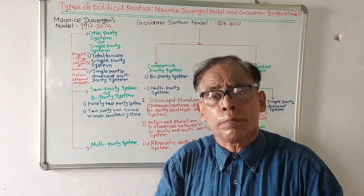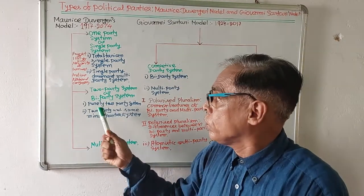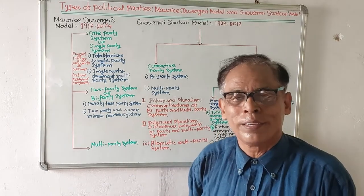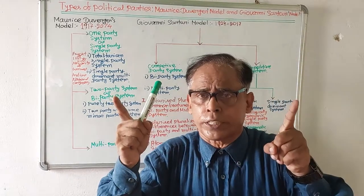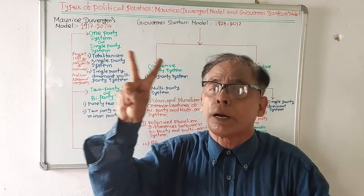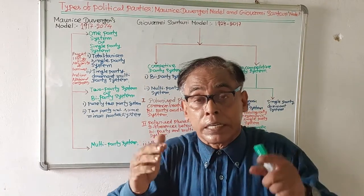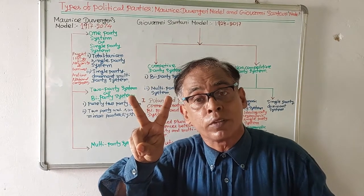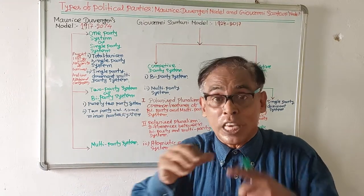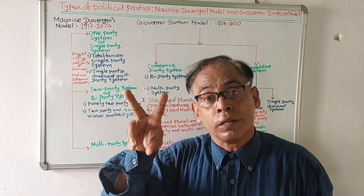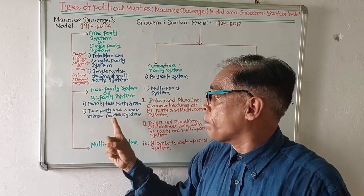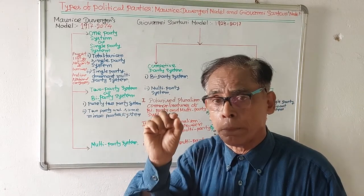He has categorized the two party system into two categories: one is the purely two party system, where in a country only two parties are found; the other is the two party and some minor party system, where two major parties are found and in addition there are also some small minor parties. This is observed in Britain and America.